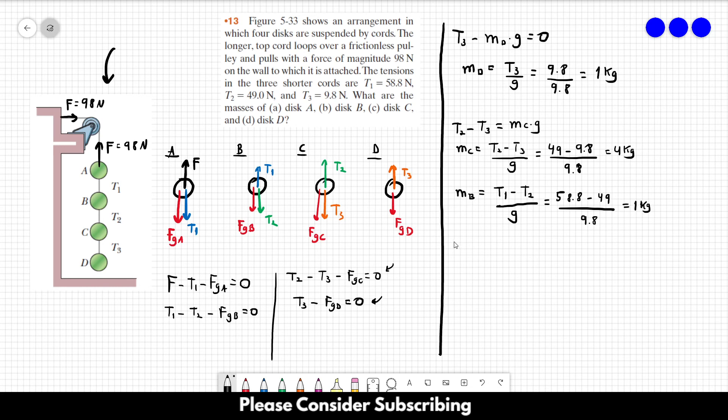As for disc A, we have that the mass of disc A equals F minus T1 over G. And this is equal to 98 minus 58.8 over 9.8, which gives us 4 kilograms. So it doesn't matter the order in this exercise.